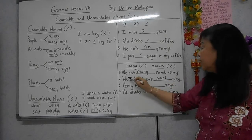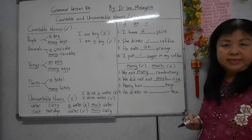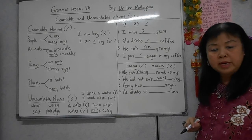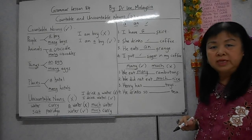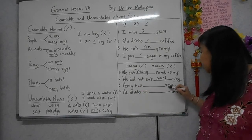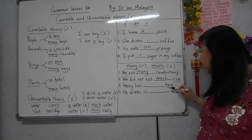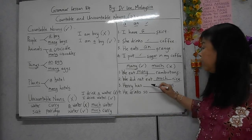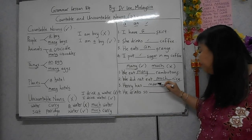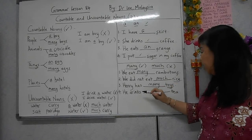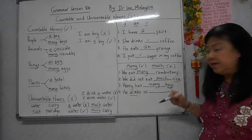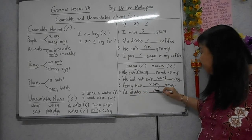Biasanya 'much' digunakan untuk ayat negatif atau tanda soal. 'Henry has many toys' - toys ialah alat permainan, boleh kira, jadi 'many'. 'He drinks much tea' - teh tak boleh kira, jadi 'much'.